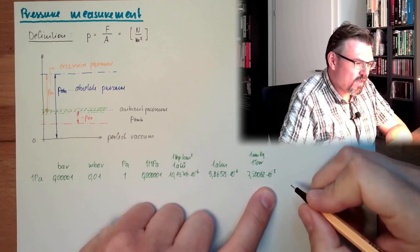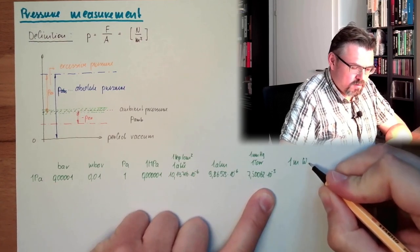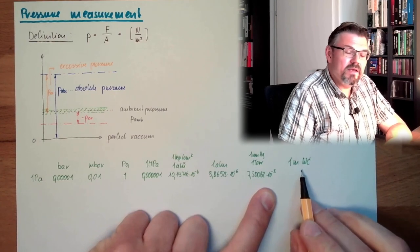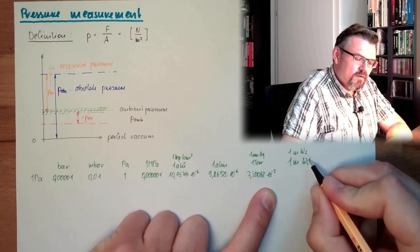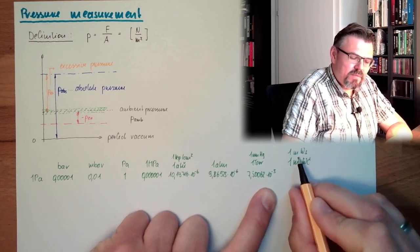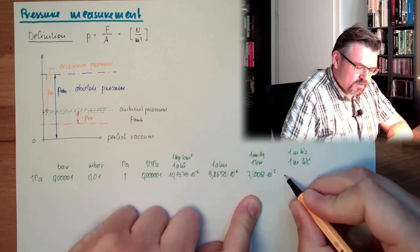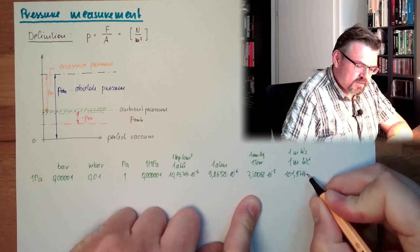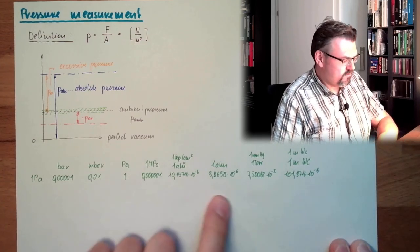This is 7.50062 raised by the power of minus 3. And then we have 1 meter water column. 1 meter water column, also in German, 1 meter Wassersäule. 1 meter water column. What is this in Pascal? It's 101.9716 raised by the power of minus 6. 1 Pascal. That's Pascal.